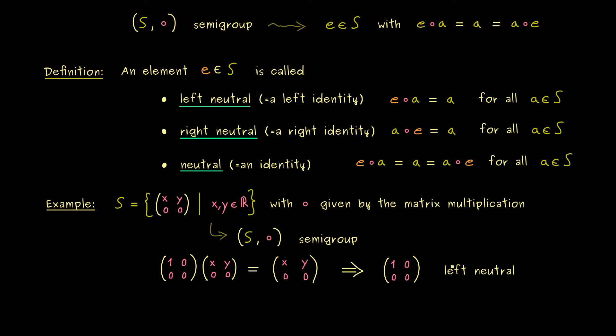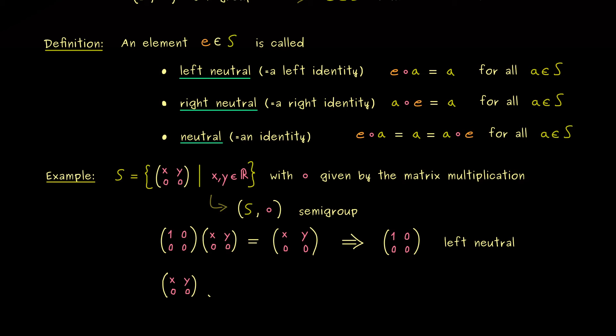However it's only that because it's not right neutral at all. And of course we can check that because we can do the matrix multiplication again. But now we do the multiplication from the right hand side.